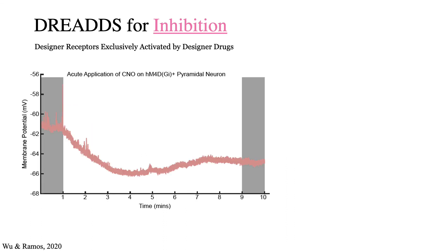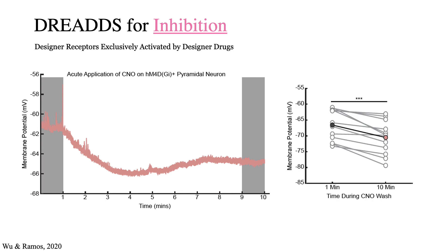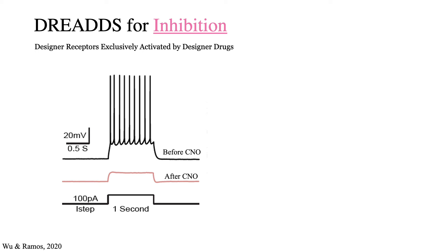If you record the membrane potential of a neuron expressing the inhibitory DREADDs receptor while washing on CNO, you can see that it results in hyperpolarization. This effect is quantified here across several cells wherein, on average, the result is a 5 mV decrease in membrane potential after CNO application. This hyperpolarization makes it much harder to evoke action potential firing in these neurons, effectively inhibiting them.